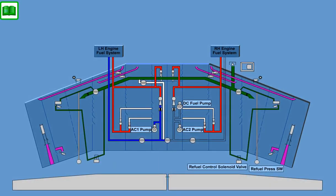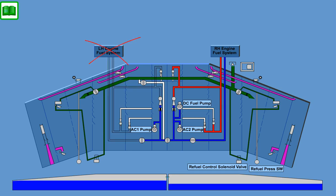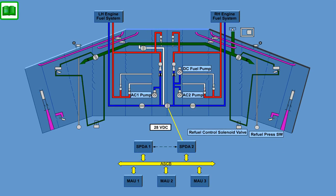The cross-feed function allows both engines to be fed from a single fuel tank. This feature permits correction of minor lateral fuel imbalances by temporarily feeding both engines from one wing tank. If one engine is shut down, the cross-feed function will be used to prevent lateral imbalance. The cross-feed subsystem consists of a motor-operated shut-off valve in a line connecting the right and left-hand engine feed lines. The cross-feed shut-off valve remains closed during normal operation. 28-volt DC power is supplied to the cross-feed shut-off valve via the solid-state power controllers in SPDA 2 from DC Essential Bus 2.